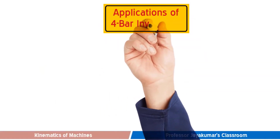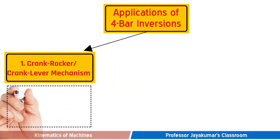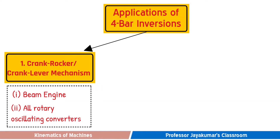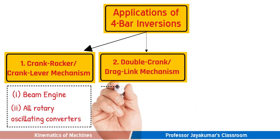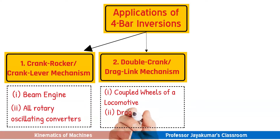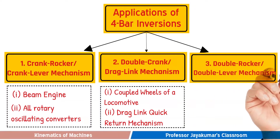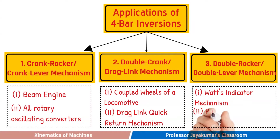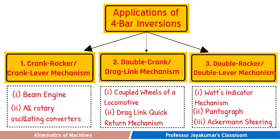Now let us summarize the various practical applications of inversions of 4-bar mechanisms. Beam engine and rotary oscillating converters are examples of crank rocker mechanism. Coupled wheels of a locomotive and drag link quick return mechanism are examples of double crank mechanism. Watt's straight line generator mechanism, Pantograph, and Ackermann steering gear mechanisms are typical applications of double rocker mechanisms. We are going to see all those applications one by one now.